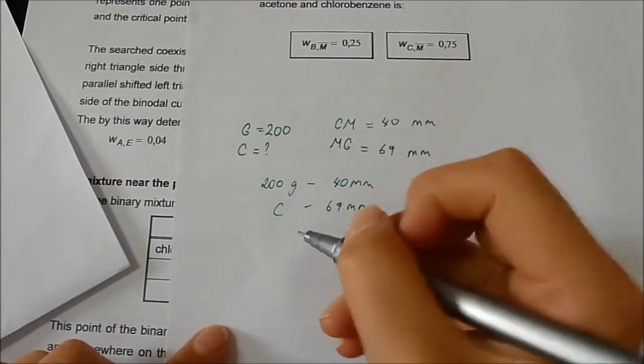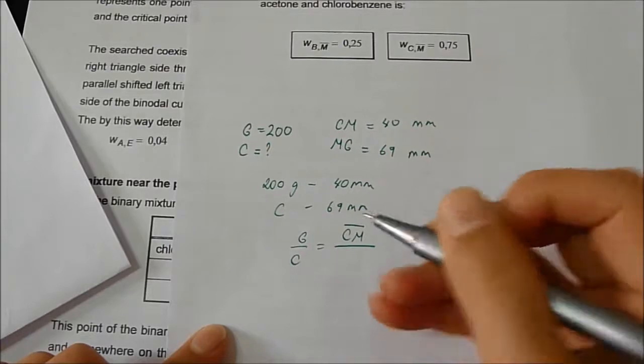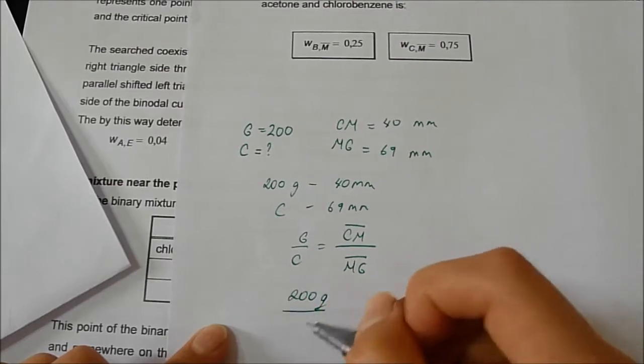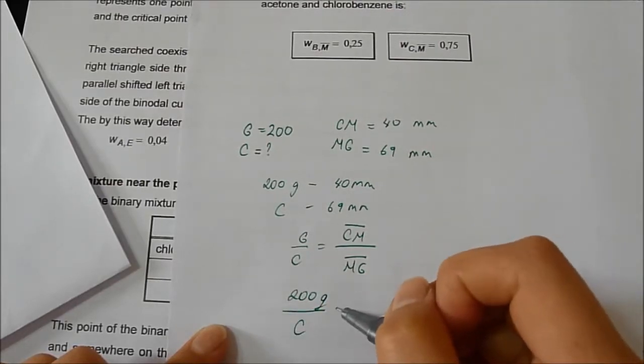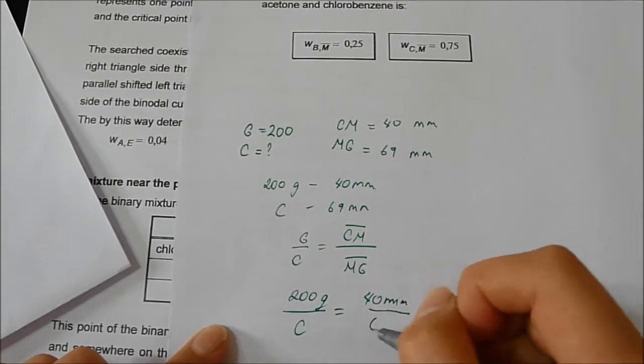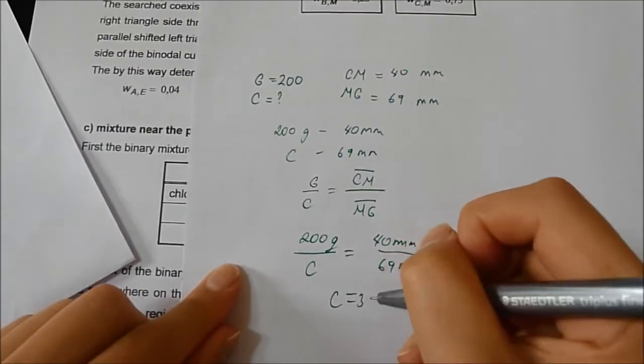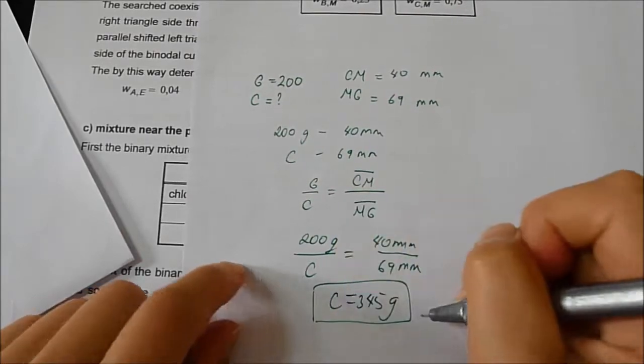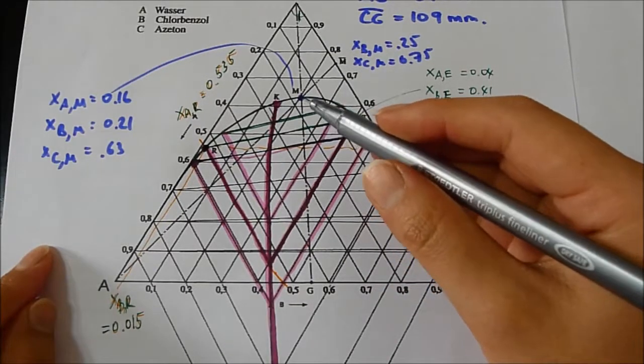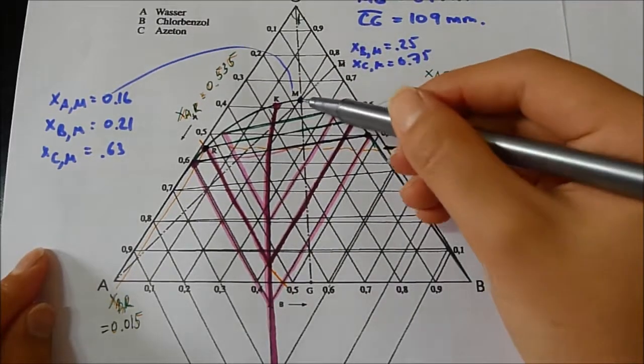From the graph, we found CM is 40 millimeters, and MG is 69 millimeters. G is the amount of mixture that needs acetone addition to reach the point M. We use the simple equation G over C equals to CM over MG. G we know is 200 grams, and C is the amount of acetone needed to reach the M point. So 40 millimeters over 69 millimeters, C is equal to 345 grams. To reach the point from G to M by adding acetone, we need 345 grams of acetone.